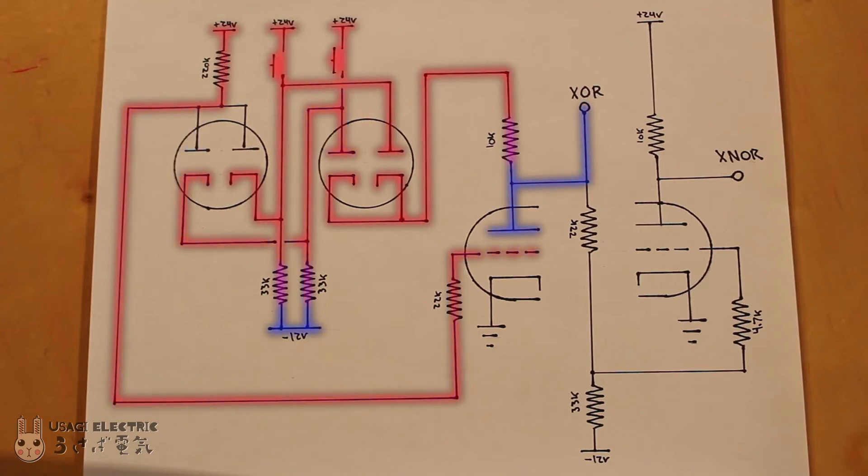When both buttons are pressed, the negative 12 volts is blocked and the resistor pulls the grid high, transitioning the output to low.